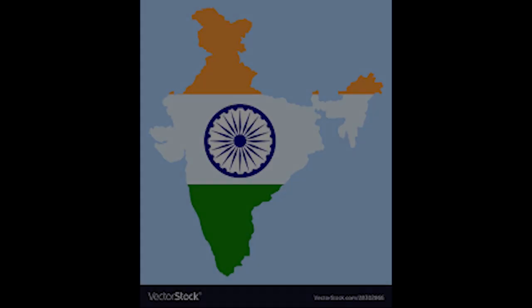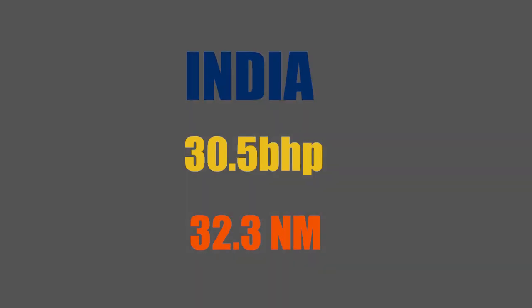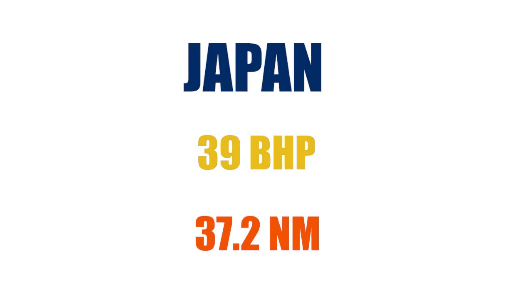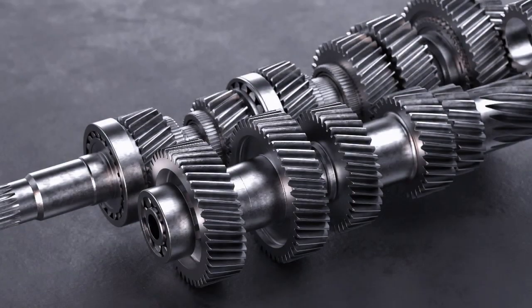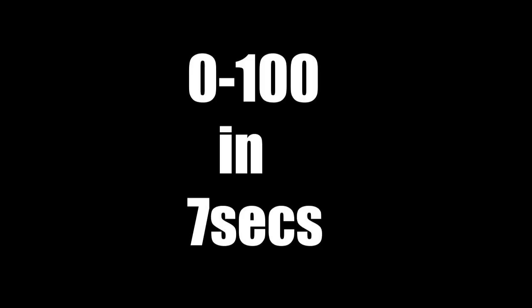Here are the key specs. Both India and Japan versions differ in power and torque. In India, the maximum power is 30.5bhp and torque is 32.3Nm. Whereas in Japan, it is 39bhp and torque is 37.2Nm. The number of gears is 7. The weight is around 143 to 155kg. The fuel tank capacity is 16.3 litres. Key highlights include tuned carburettors and torque induction.